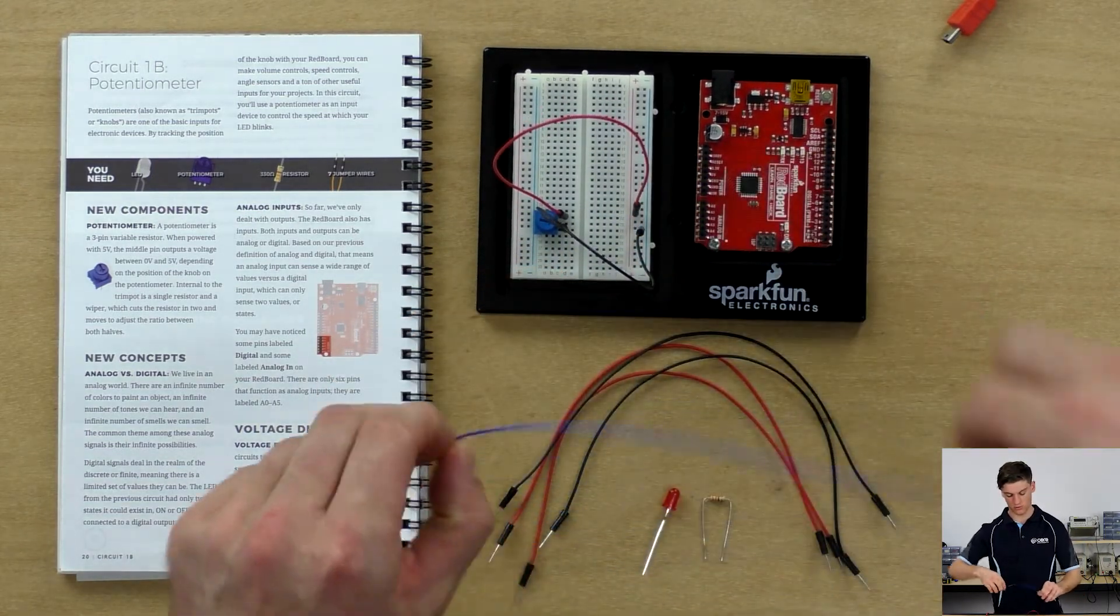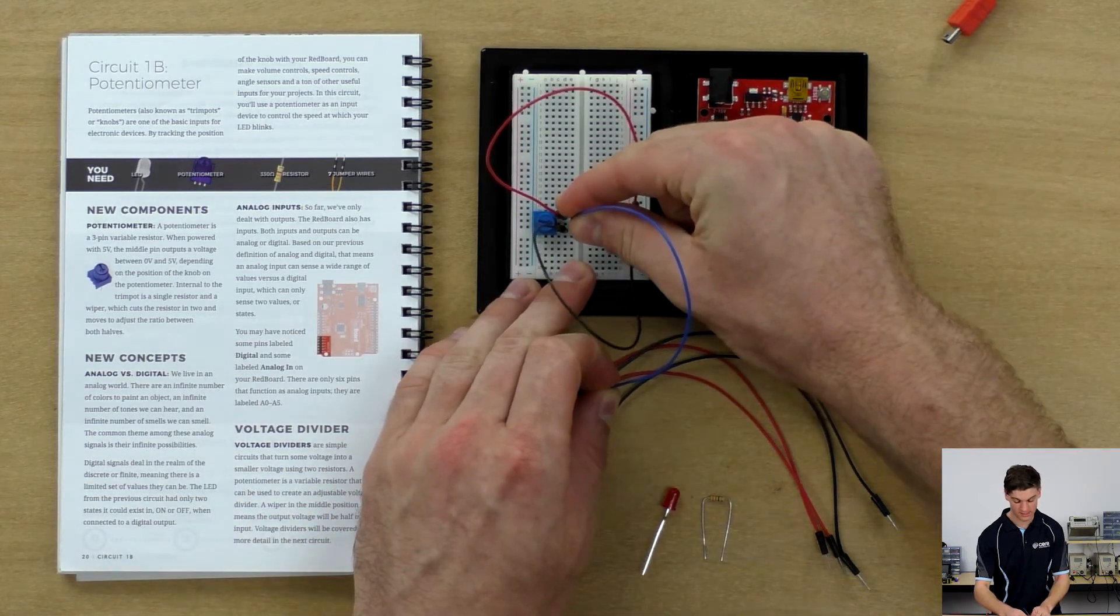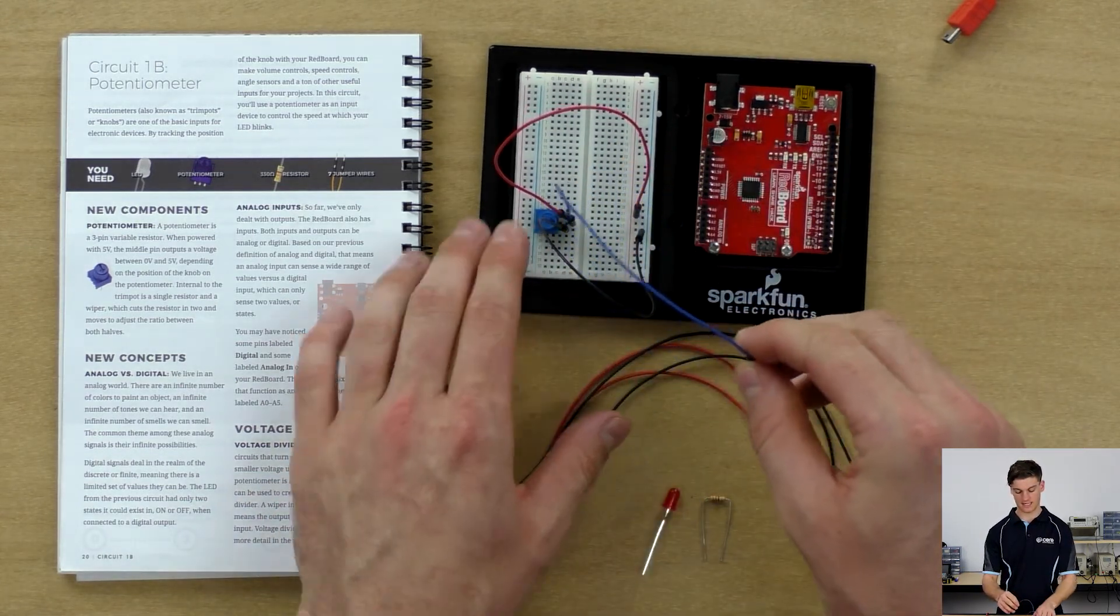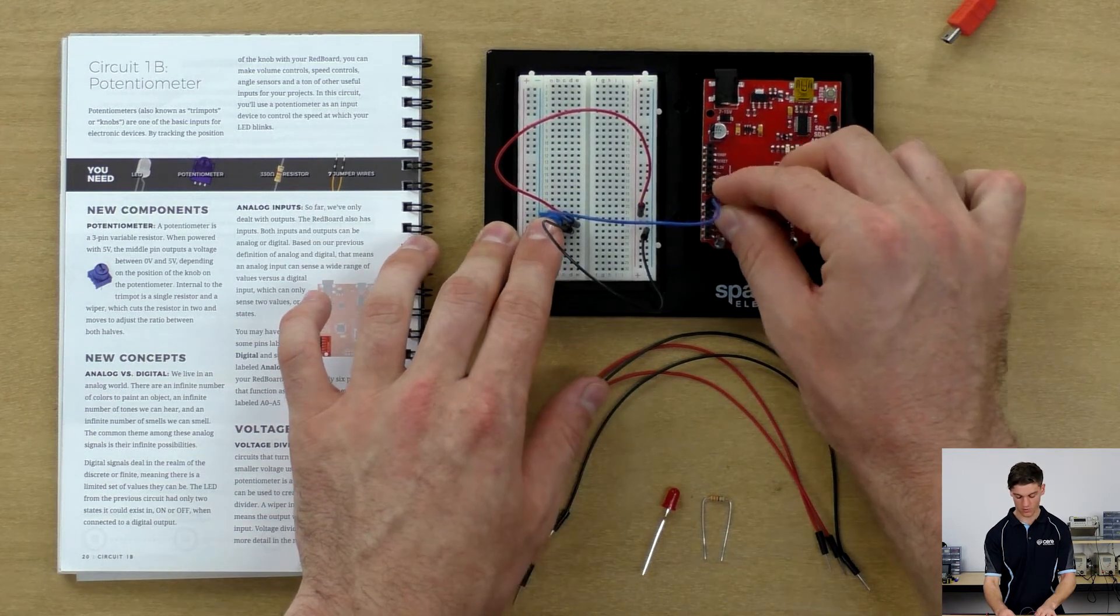Then we're going to use this blue jumper wire to connect the center pin to the analog 0 port.